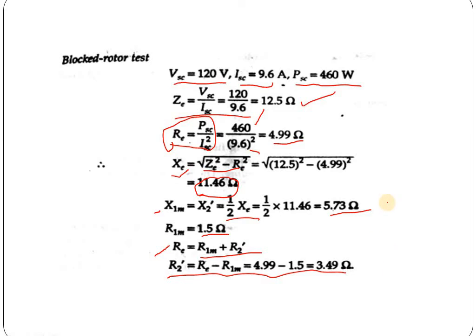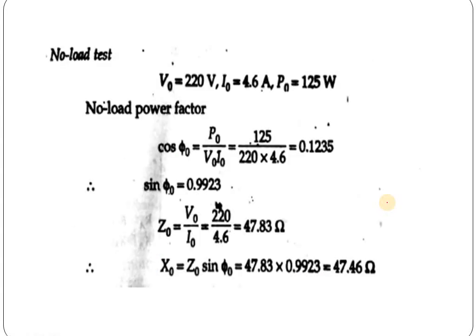So from the block rotor test, we have calculated the equivalent resistance, equivalent reactance, main winding reactance, and the value of R2 dash, which is the rotor referred resistance. Next, we will calculate the no-load test data. V0, the no-load voltage from the voltmeter reading, is 220V. I0, the no-load current from the ammeter reading, is 4.6A. The wattmeter reading at no-load condition is 125W.